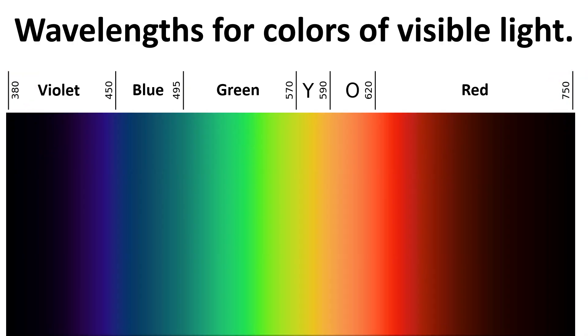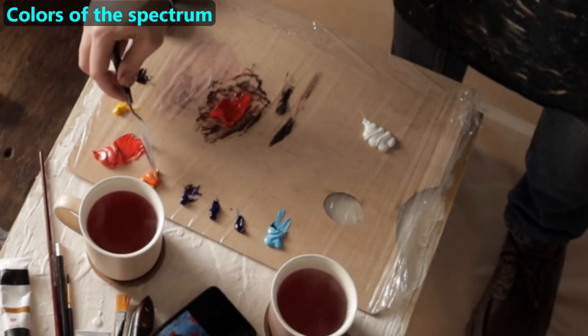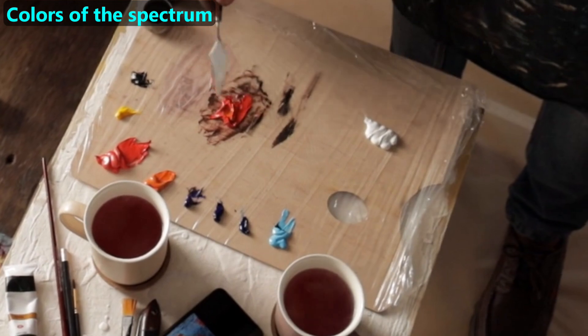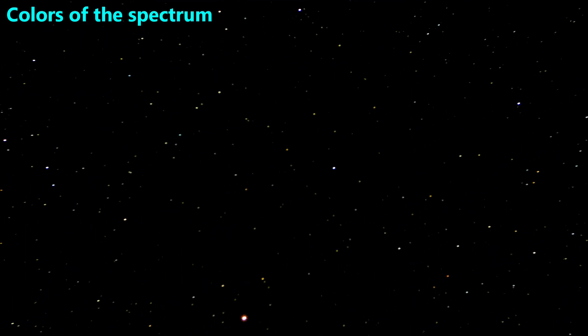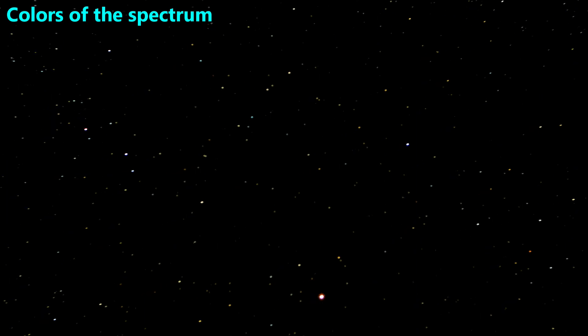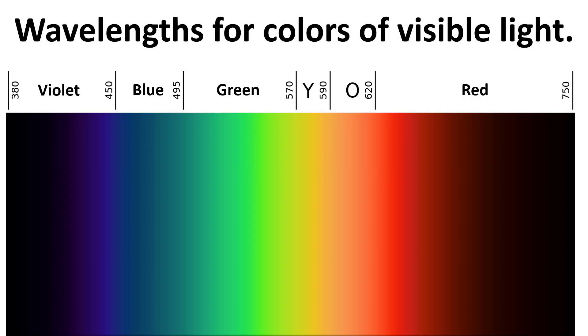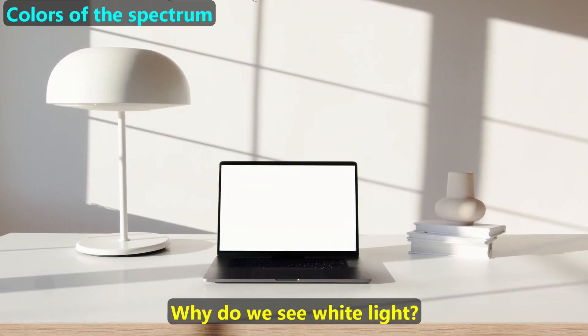Please note that there are two colors missing from this display, the colors black and white. We normally find these among any paint set, but they do not exist as specific colors for light. There is no such thing as a visible light color that's black. When we look into outer space and see black between the stars, we are noting the absence of any light. There is also no color in the spectrum that is white. So then, why do we see white light?